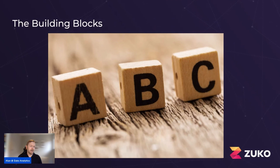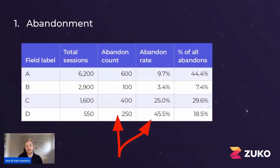First, I'll be looking at the basics — the building blocks, which are the simple, easy metrics that get you started and point you in the right direction on where to look at your form fields. There are four of those, which I'll take you through. The first one is based around abandonment — what is the last thing the user interacted with on your form before jumping away and never coming back?